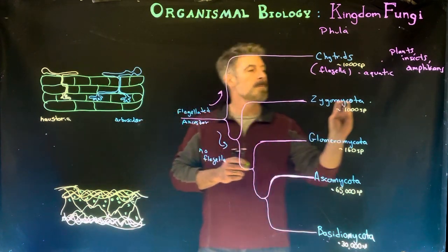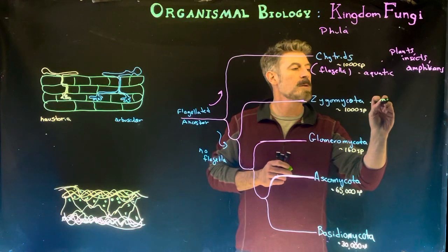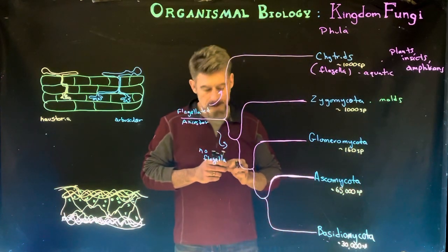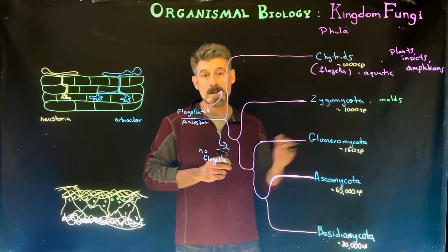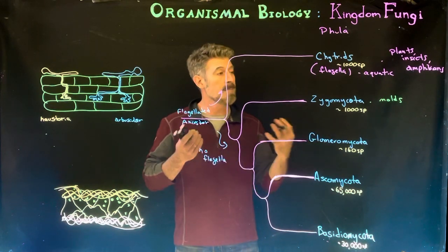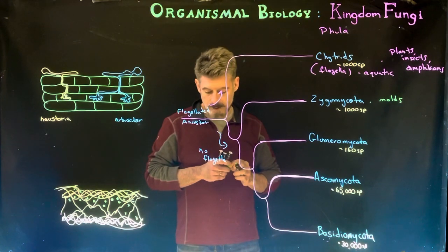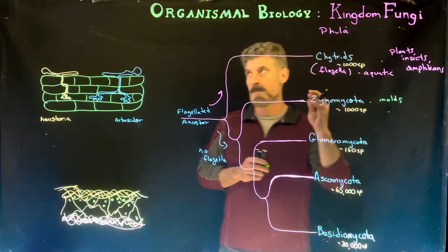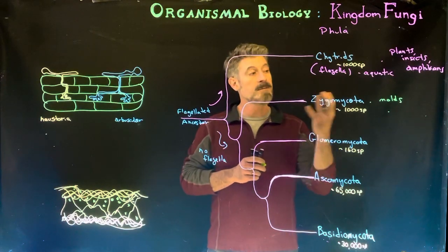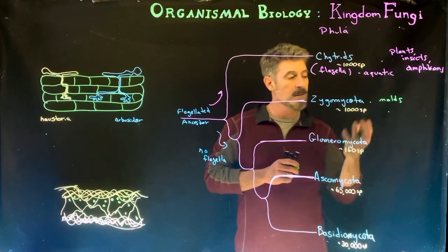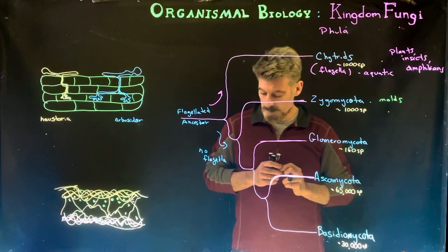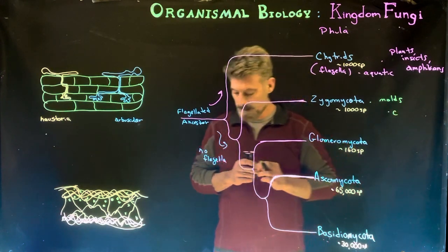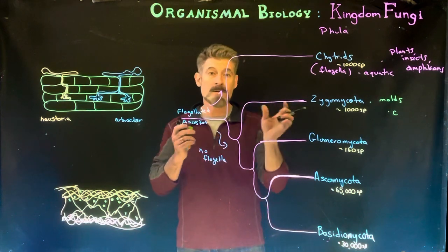Zygomycota are mostly a group that contains organisms referred to as the molds. Many of them are useful commercially, producing a number of biochemical products that we use. Mostly they're decomposers of dead or decaying material, and their hyphae are more of the type of the coenocytic ones that do not have septa.